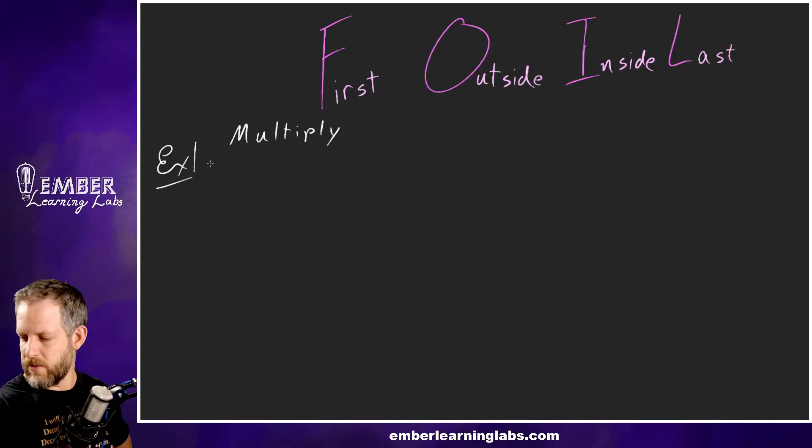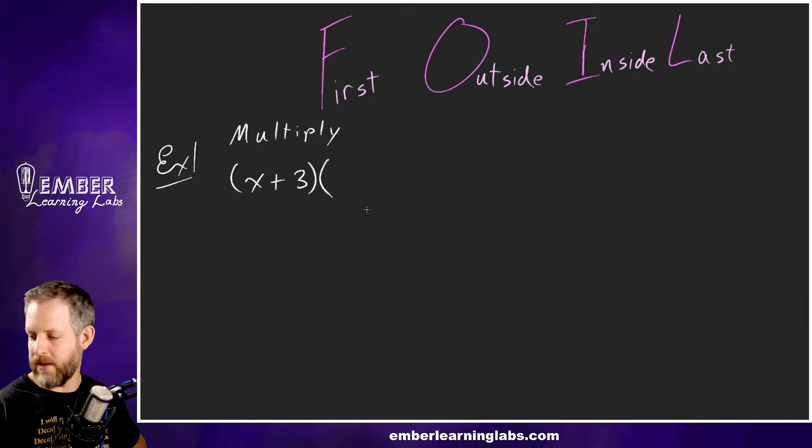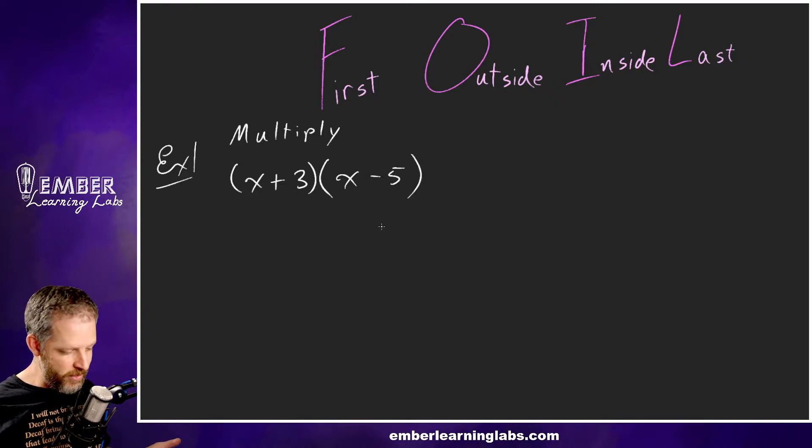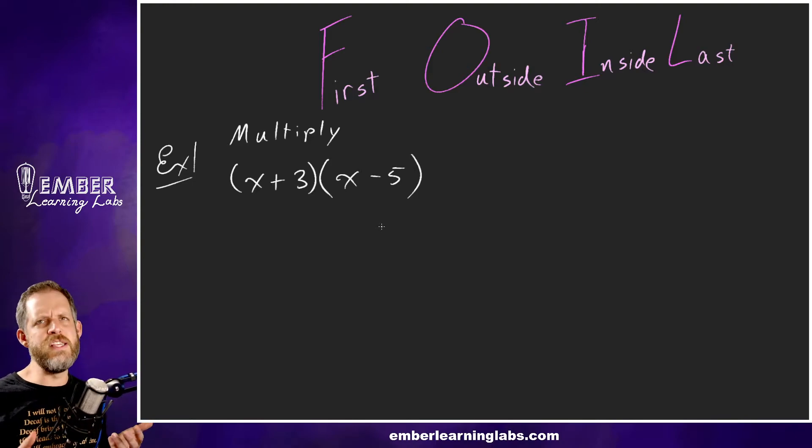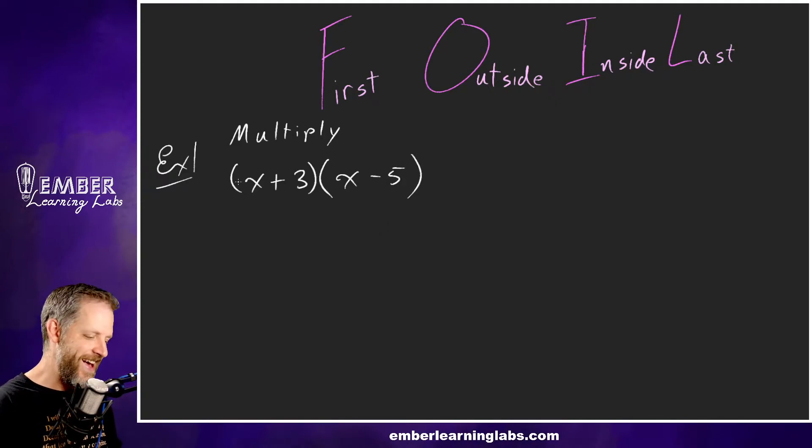So the first one we're going to multiply is (x + 3) times (x - 5). These are polynomials in this case, and we're using the FOIL method. We're talking about specifically multiplying a binomial - a two-term polynomial, one, two - times another binomial, one, two terms.